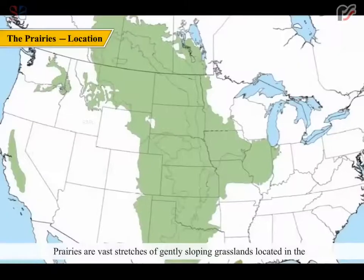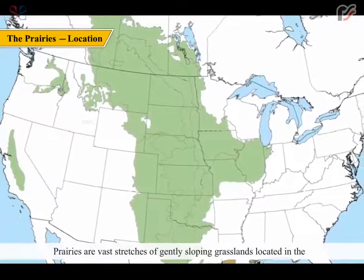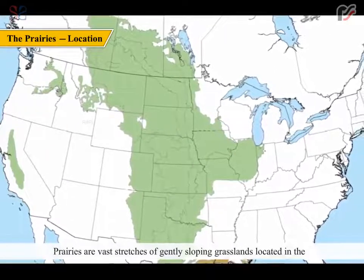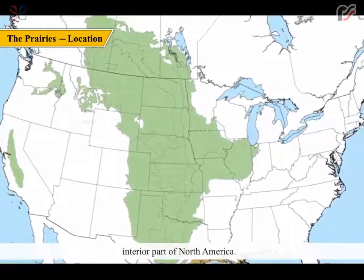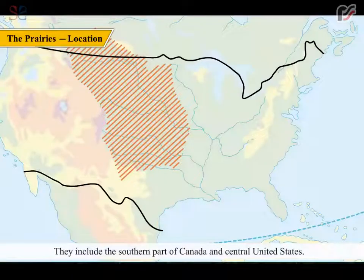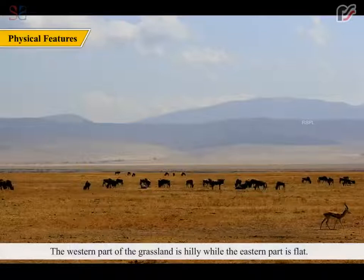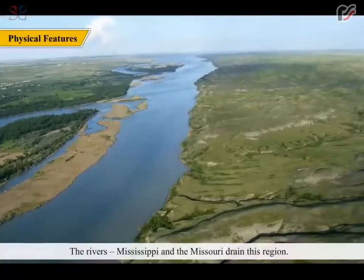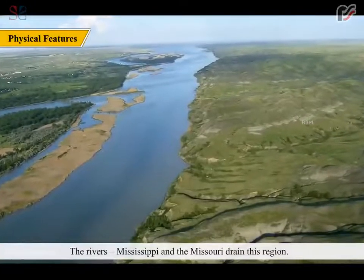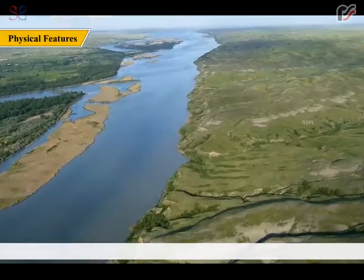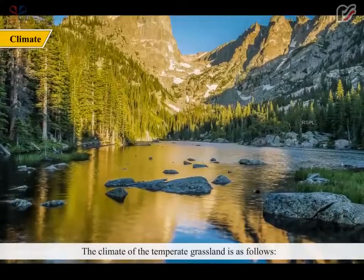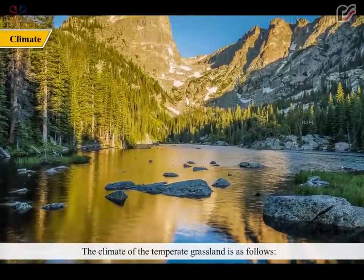Prairies are vast stretches of gently sloping grasslands located in the interior part of North America. They include the southern part of Canada and central United States. The western part is hilly while the eastern part is flat. The rivers Mississippi and Missouri drain this region.